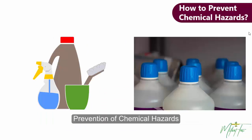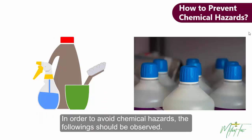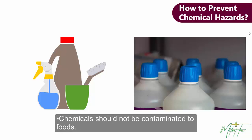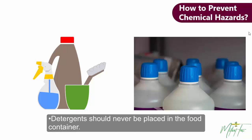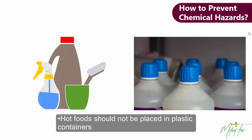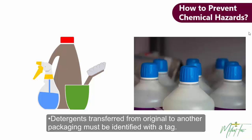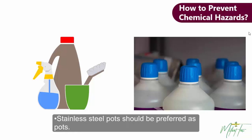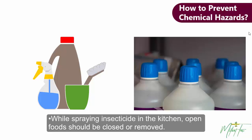Prevention of Chemical Hazards. In order to avoid chemical hazards, the following should be observed. Chemicals should not be contaminated into foods. Detergents should never be placed in food containers, and food containers should never be used as detergent containers. Hot food shouldn't be placed in plastic containers. Detergents transferred from original to another packaging must be identified with a tag. Stainless steel pots should be preferred. While spraying insecticides in the kitchen, open food should be covered or removed.